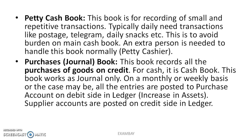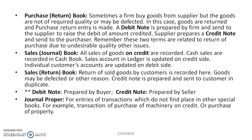The purchase book records credit purchases of raw materials or goods — not assets like machinery, but goods for the business. It is a book of original entry. Purchase amounts are posted on the debit side of the ledger, and supplier accounts are posted on the credit side. If purchased goods are defective and returned to the vendor, that is recorded in the purchase return book, and a debit note is issued.